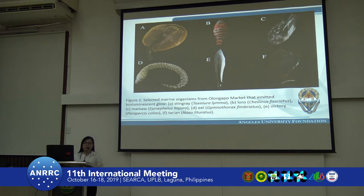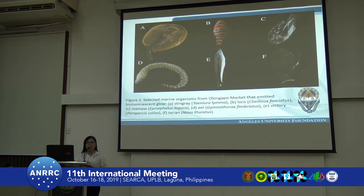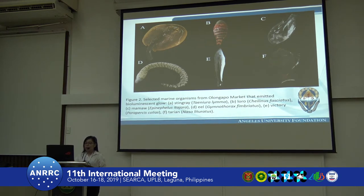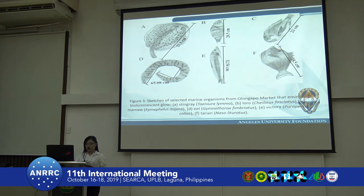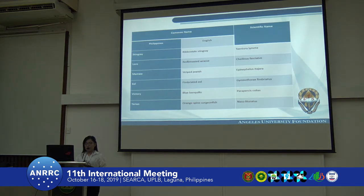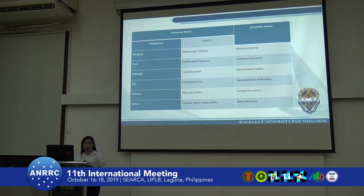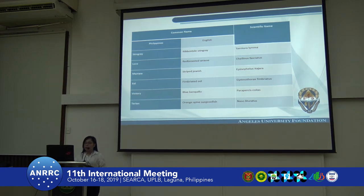In the study I am presenting now, we collected bioluminescent bacteria from marine fishes such as stingray, loro, mamaw, eel, and tarian. Here is the identification of the marine fishes coming from Olongapo City, as identified by the Bureau of Fisheries.